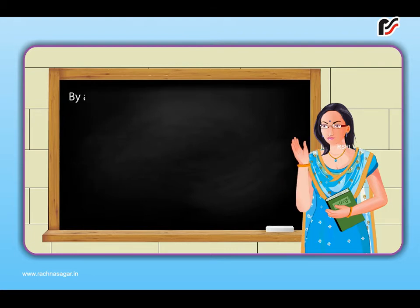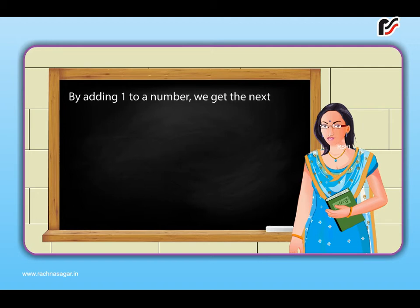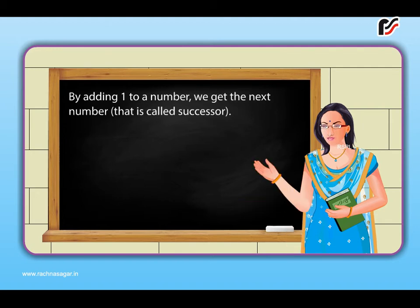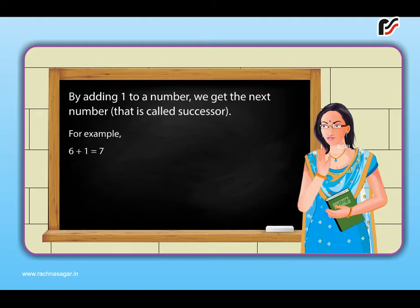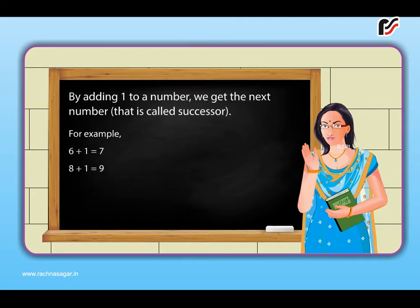By adding 1 to a number, we get the next number. That is called the successor. For example, 6 plus 1 is equal to 7. 8 plus 1 is equal to 9.